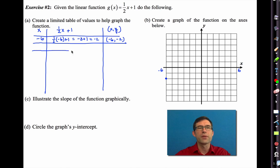I'm going to clear this out, and then we're going to work more with equations of lines. Exercise number two. Given the linear function g(x) equals one-half x plus one, do the following. Create a limited table of values to help graph the function. Let's do it. We could definitely use our graphing calculator here, but we're going to do this by hand, I think.